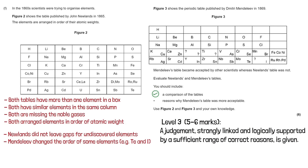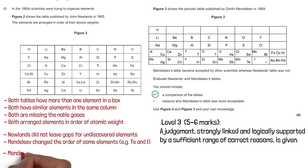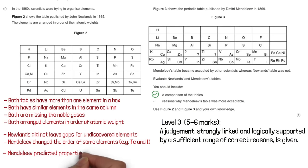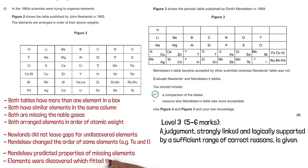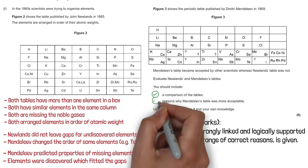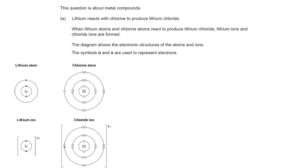For reasons why Mendeleev's table was more acceptable: Mendeleev predicted properties of missing elements, and elements were subsequently discovered which fitted the gaps he had left.